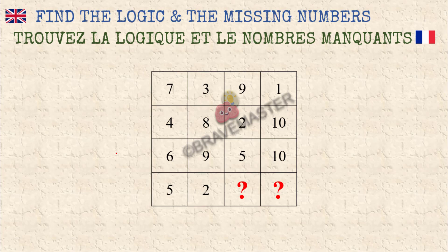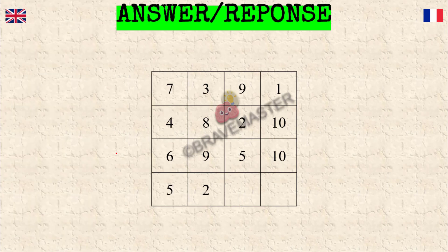Time is up. Great. I'm sure you found this. At first you thought this was pretty easy. You just sum up these two. 7 plus 3 equals 9 plus 1.